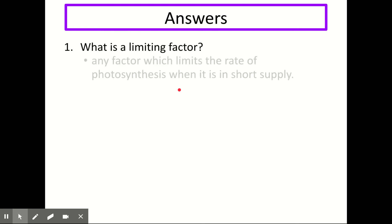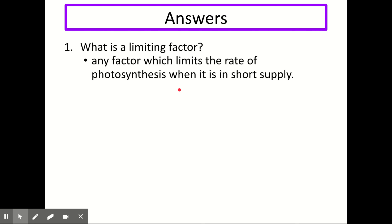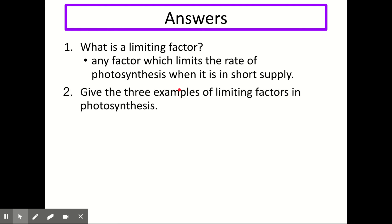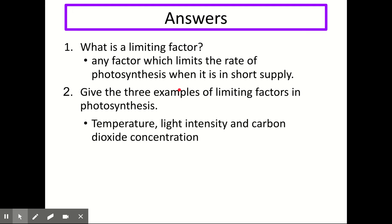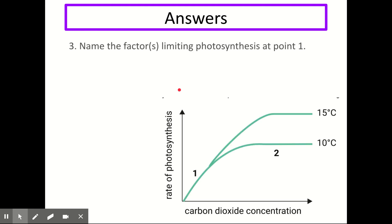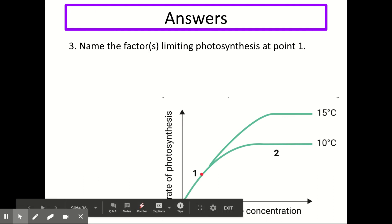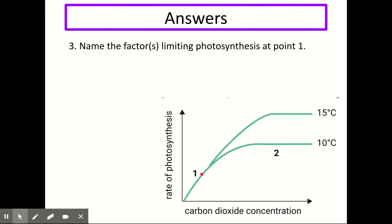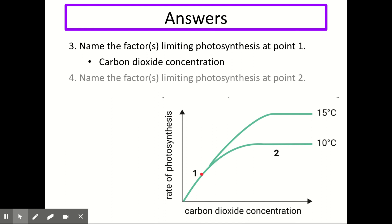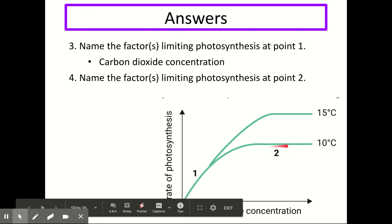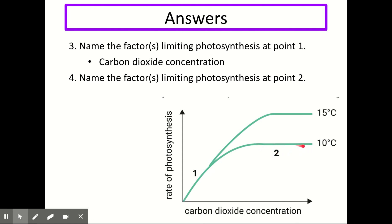Question 1: what is a limiting factor? A limiting factor is any factor which limits the rate of photosynthesis when it's in short supply. Question 2: give the three examples of limiting factors — temperature, light intensity, and carbon dioxide concentration. Question 3: at point one on the graph there's a gradient, so we look at the x-axis — the answer is carbon dioxide concentration. Question 4: at point two, we know it's not carbon dioxide concentration because increasing it keeps the rate constant. The difference between the two lines is temperature, so temperature is the limiting factor at that point.